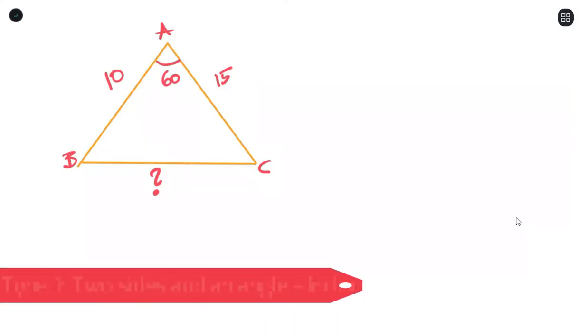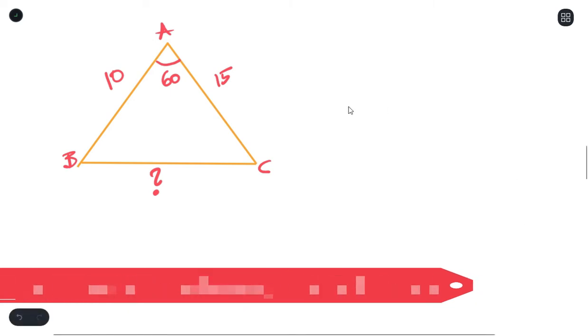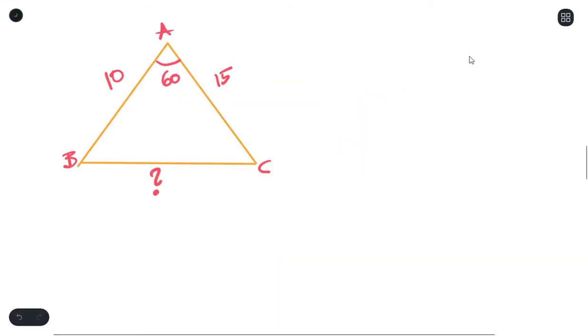We normally use cosine rule whenever you have an included angle. An included angle means you have two sides and an angle in between those two sides. Just like in this case, we have side 10 and side 15. And we have an angle 60 in between 10 and 15. Now this is a classic case of how to use cosine rule. So for this here, you will use the formula. So the formula here would be...